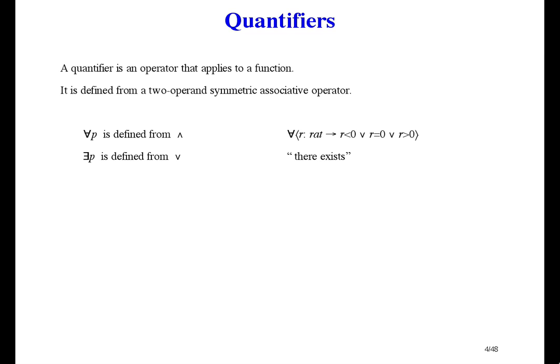The backwards E is called the existential quantifier, pronounced 'there exists.' In my opinion, that's a very unfortunate pronunciation because it has nothing to do with the existence of anything. Like 'for all,' it's an operator that applies to predicates with a binary result. The result can be thought of as applying the predicate to all its domain elements and then disjoining all those results together. Here's an example: there exists N in NAT such that N equals 0. In this example, the result is again true.